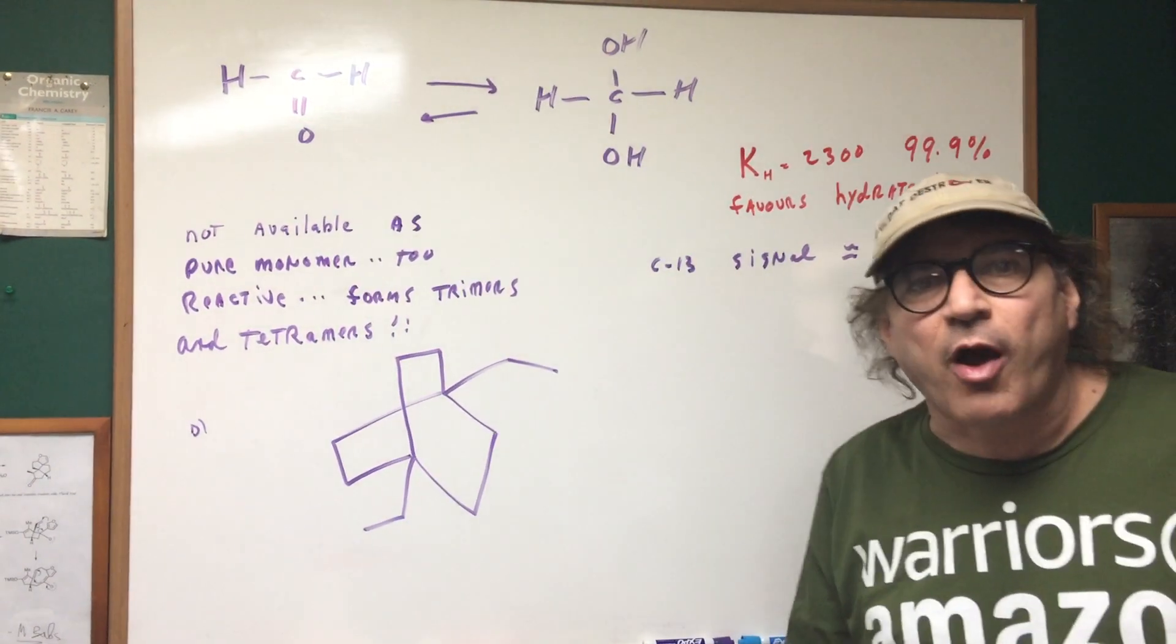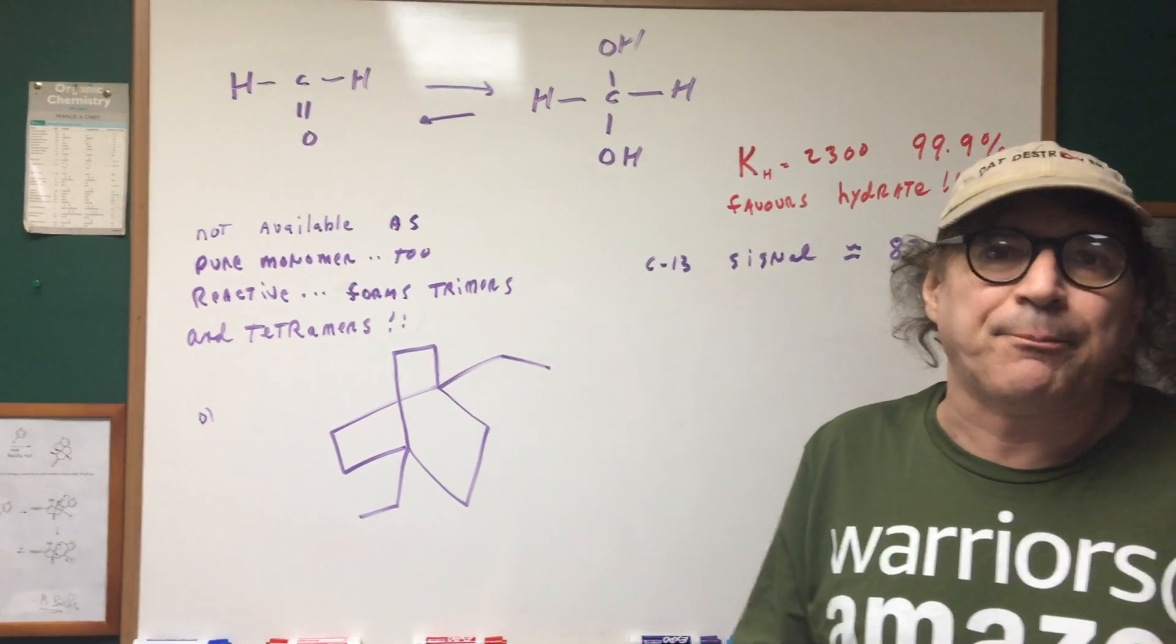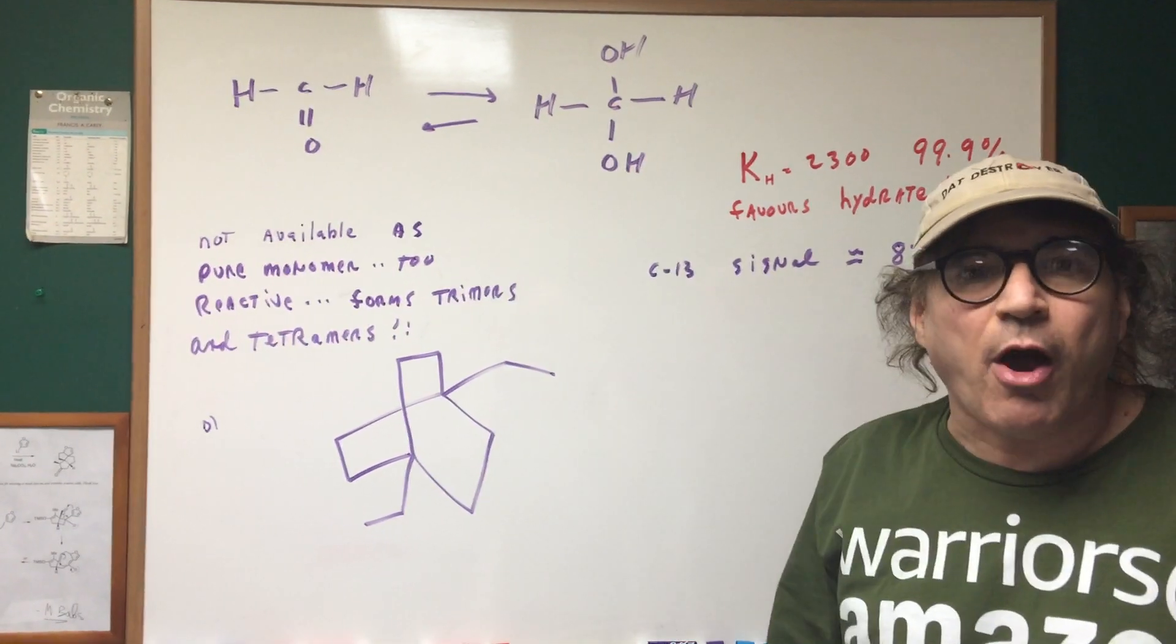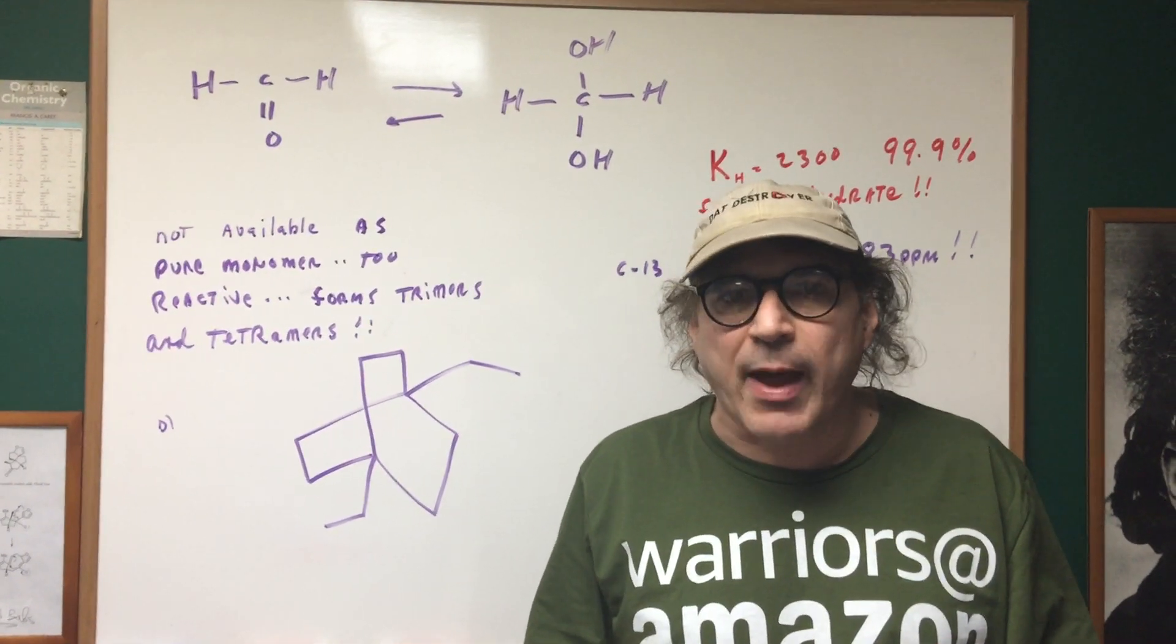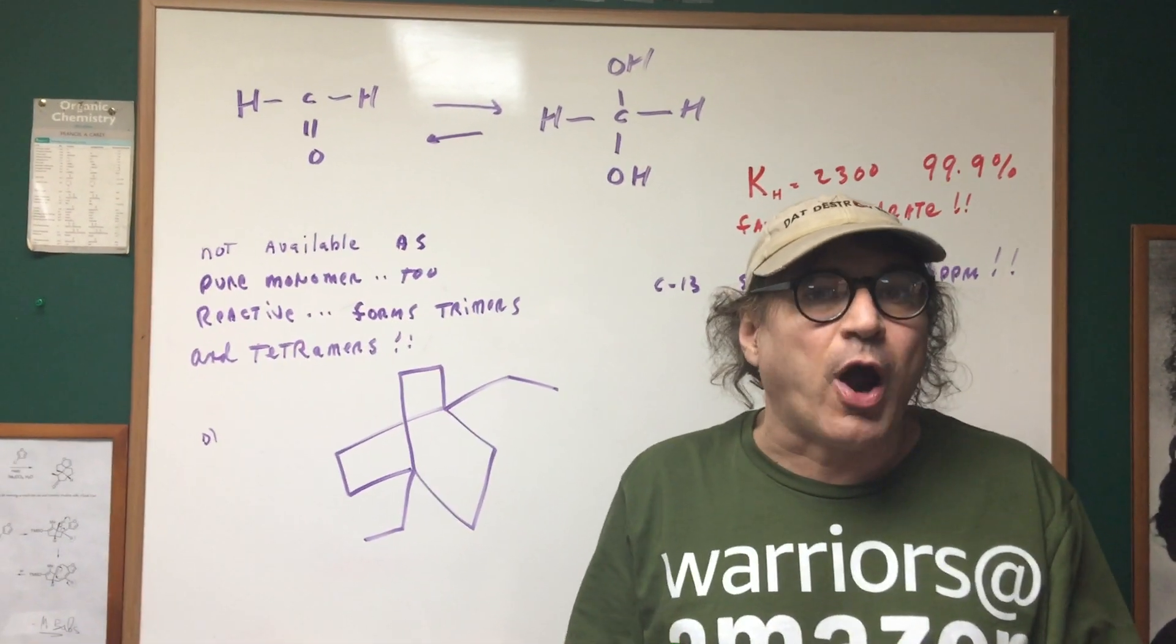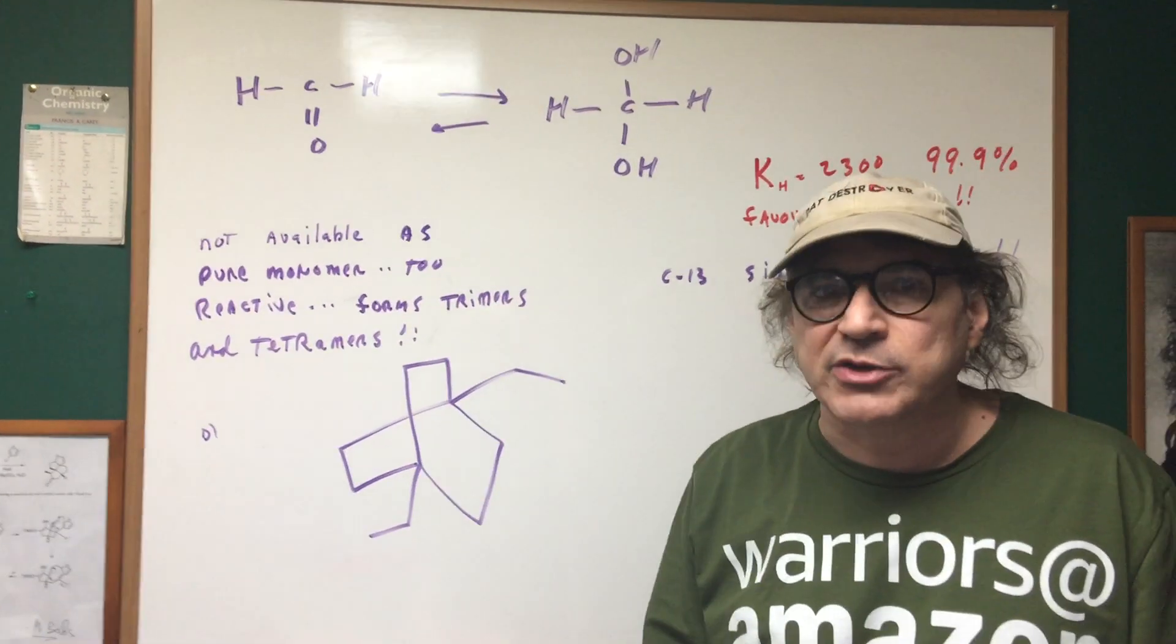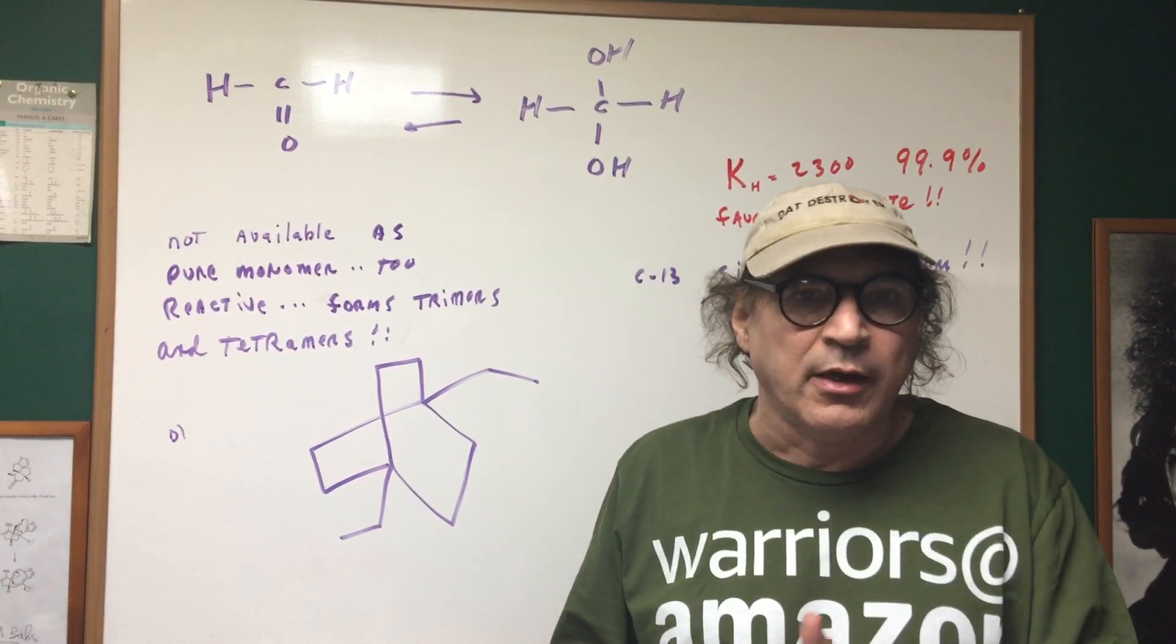That would mean that 99.9% of this molecule exists in the hydrate form. It's very important for the DAT so you're going to remember. Always remember we always shift the equilibrium towards the carbonyl compound unless it's very very tiny like we see in formaldehyde then it shifted in the direction of the diol.